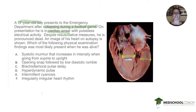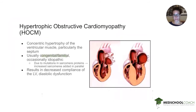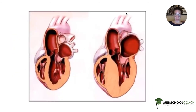The disease that gives you septal hypertrophy and can lead to sudden death in an otherwise healthy young person is hypertrophic obstructive cardiomyopathy, or HOCM. HOCM is a congenital or familial disease that causes concentric hypertrophy of the ventricular muscle, particularly the septum.